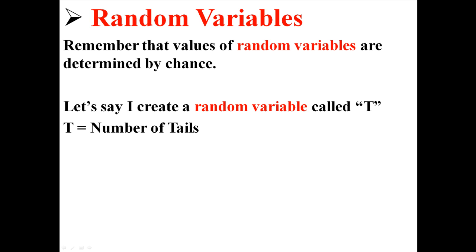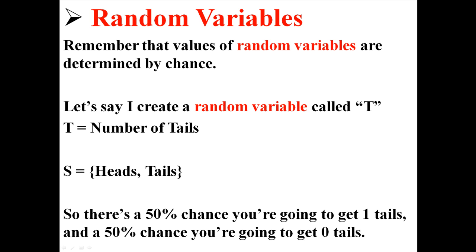Like for example, let's say I create a random variable called T, which represents the number of tails you get when you flip a coin. If you flip a coin once, your sample space is heads and tails because you can either get heads or you can get tails.